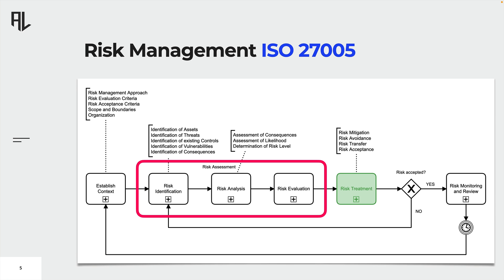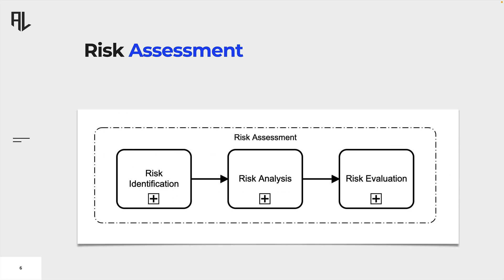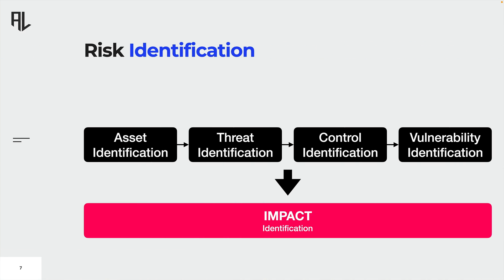Risk assessments include three steps: risk identification, risk analysis, and risk evaluation. Risk identification is the first step and prerequisite to the following steps. Organizations try to determine possible adverse events that can harm their security objectives. Therefore, organizations need to identify their assets, vulnerabilities, existing controls, and the current threat landscape. With this information, risks and the associated negative consequences and impacts can be determined.